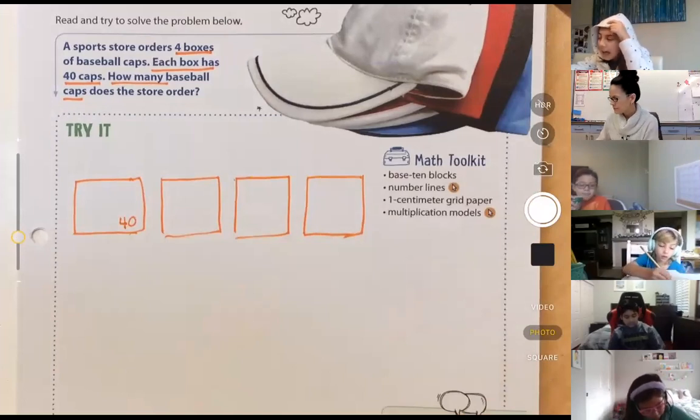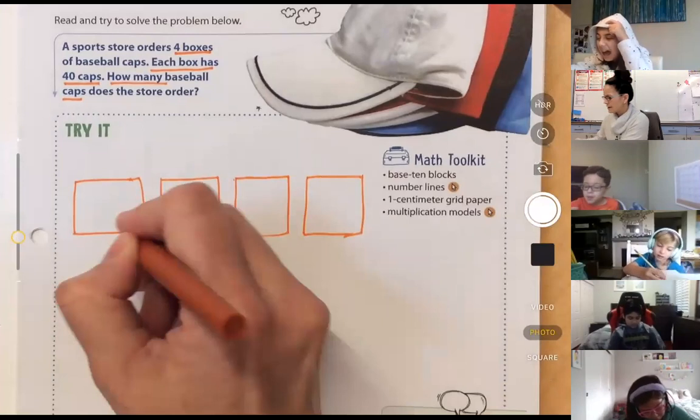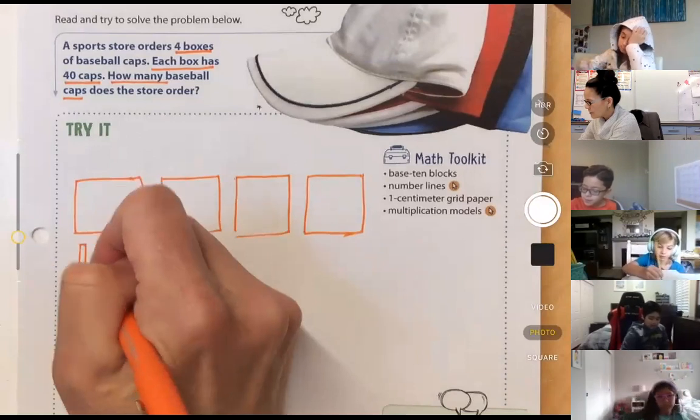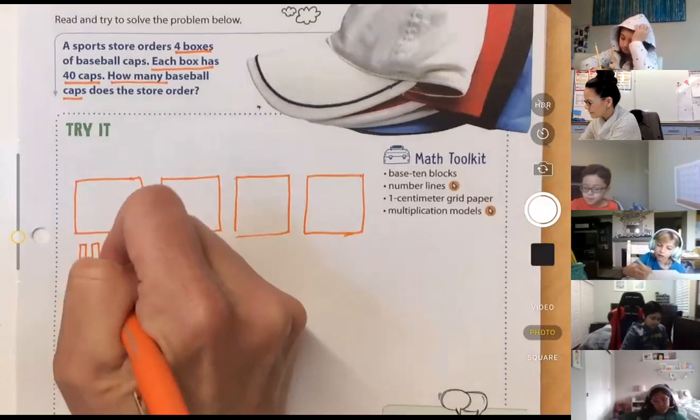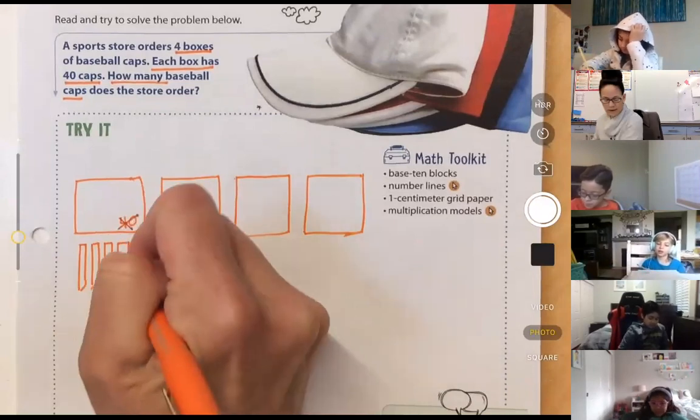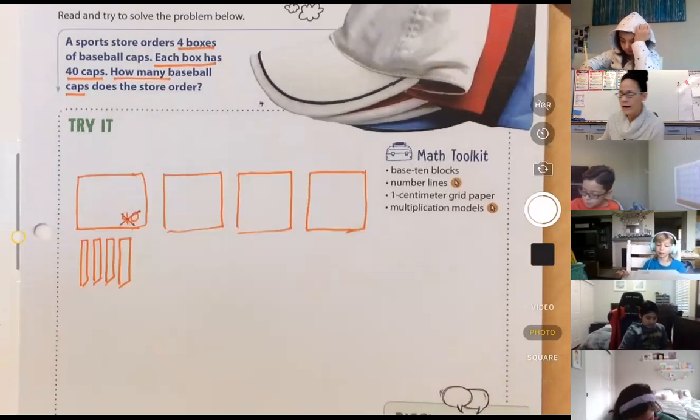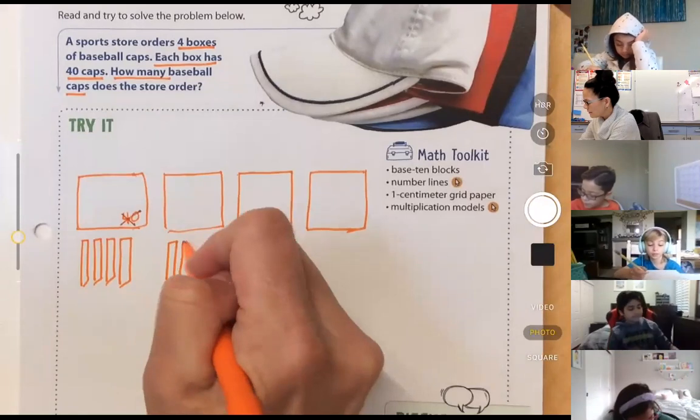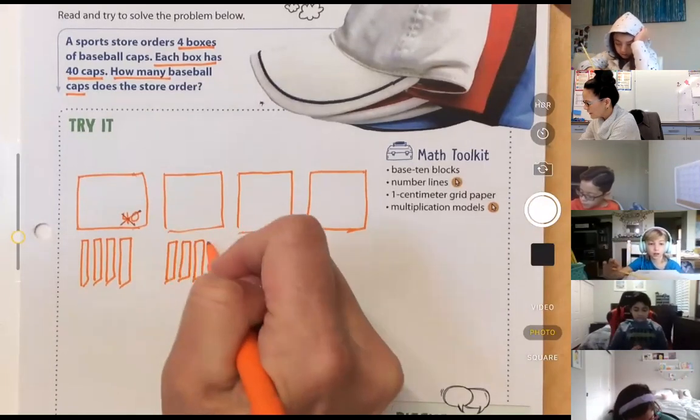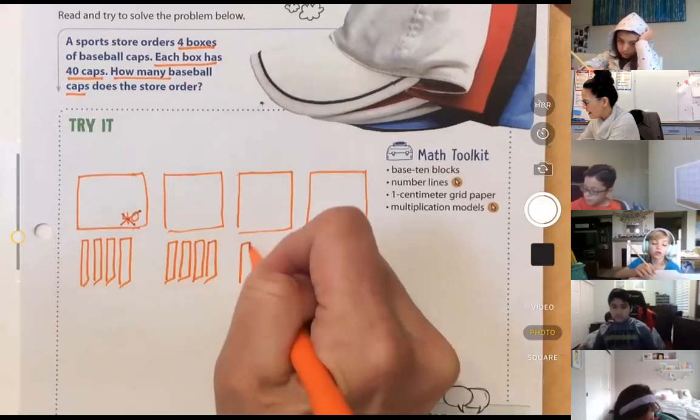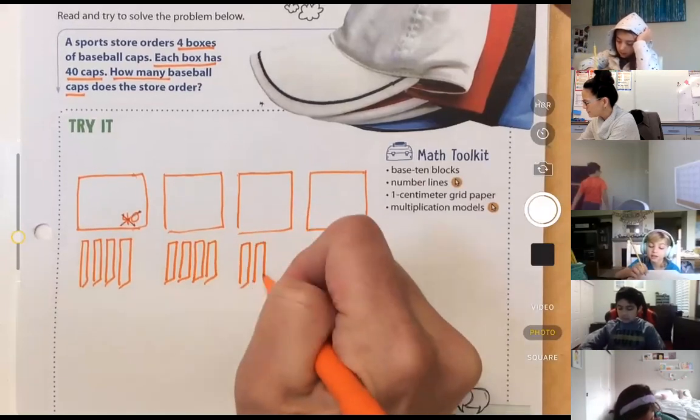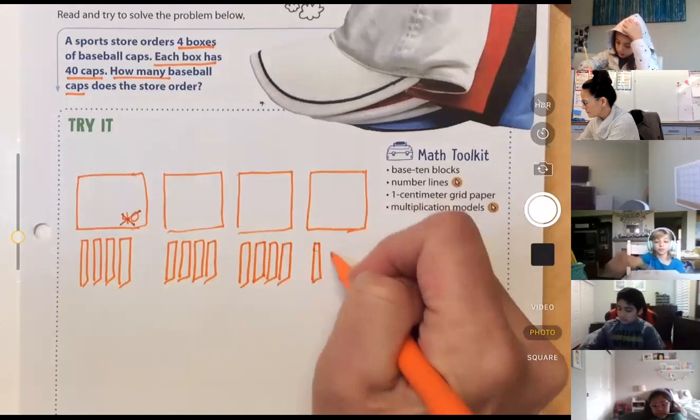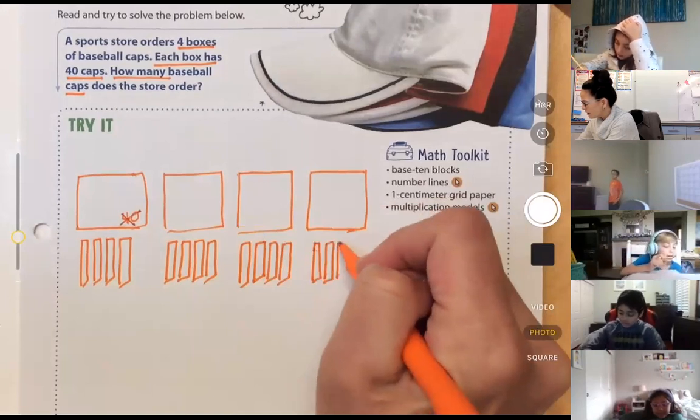Each one has 40 caps. So remember what we did, friends, when we were talking about multiples of 10 and place value? Instead of using the 40 and trying to forward count by 40, it's a little hard for our brains. So instead, what we did was we built out the model using 10 bars, and we did that for every single box or group. Each one of these bars is representing 10 caps. Can these models take some time to draw? Of course they can.